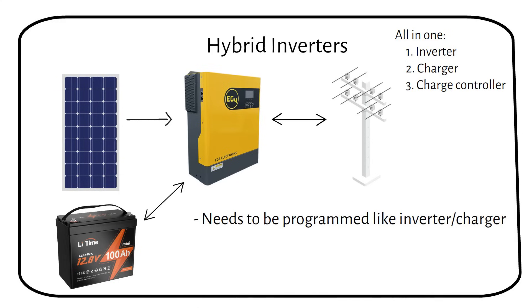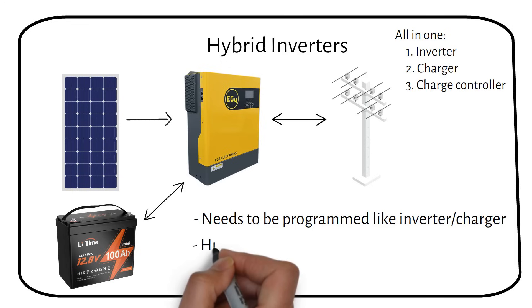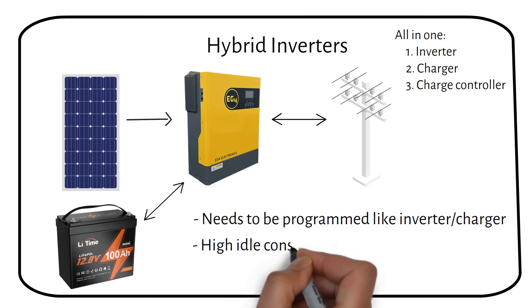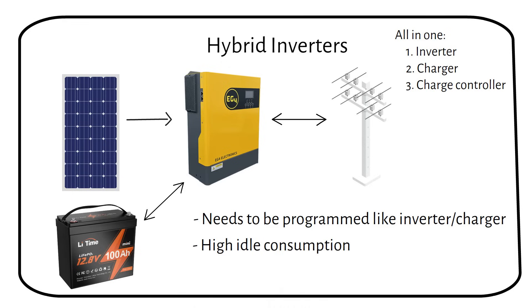Setting up a hybrid inverter involves more complexity than an off-grid inverter, particularly because it must be programmed to comply with specific grid codes. One consideration when opting for a hybrid inverter is its idle power consumption, which tends to be higher than that of more basic inverters. For instance, a 2 kilowatt unit might consume around 30 watts when idle, while an 8 kilowatt unit could use up to 120 watts. This increased energy use should be taken into account when sizing your solar system.